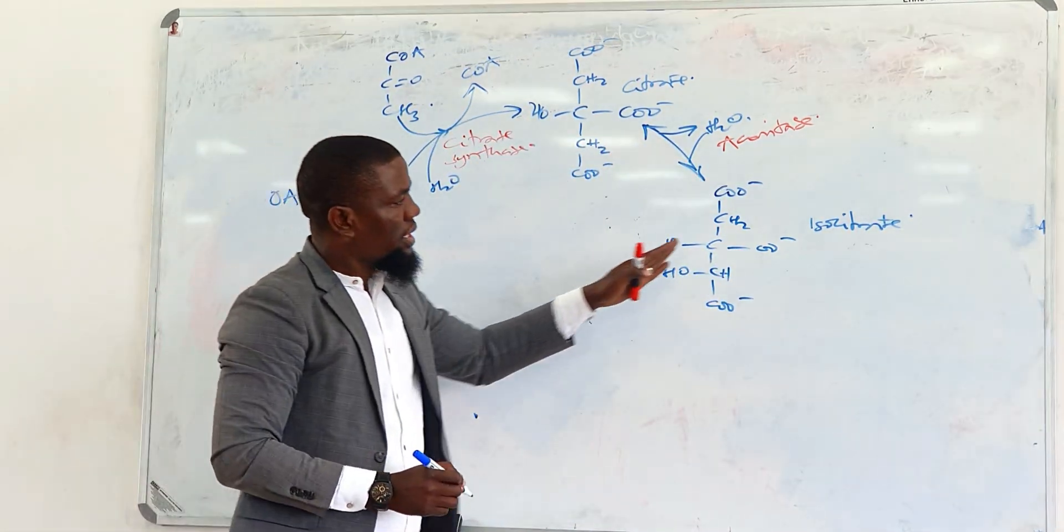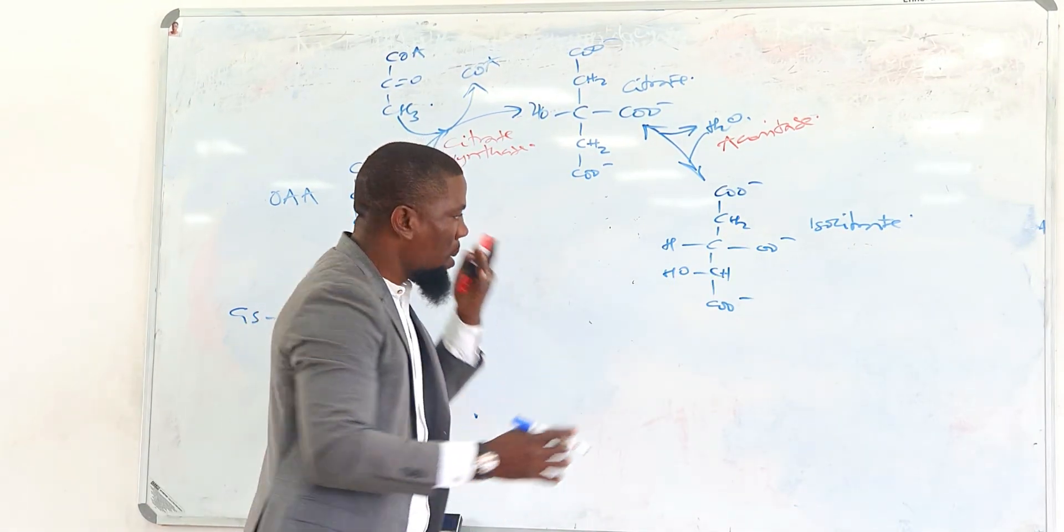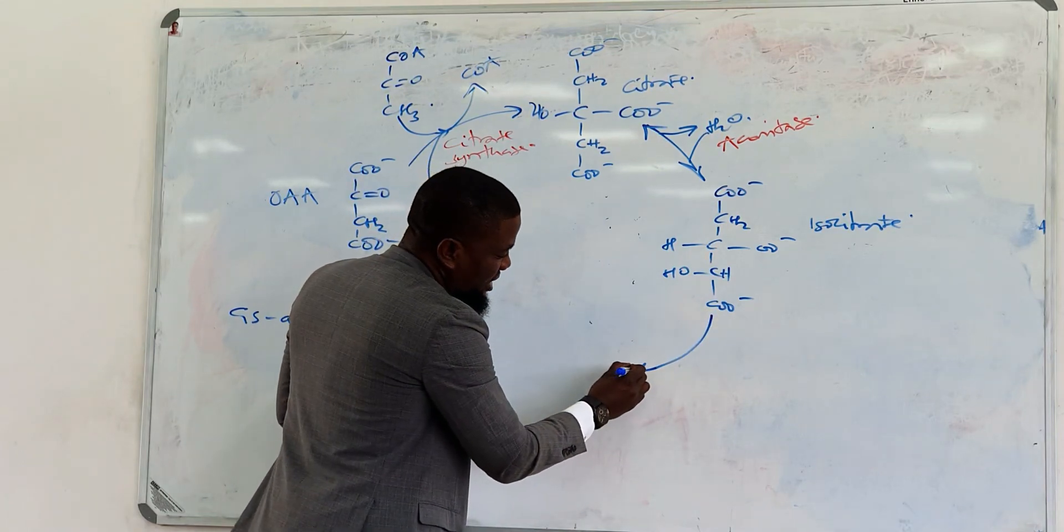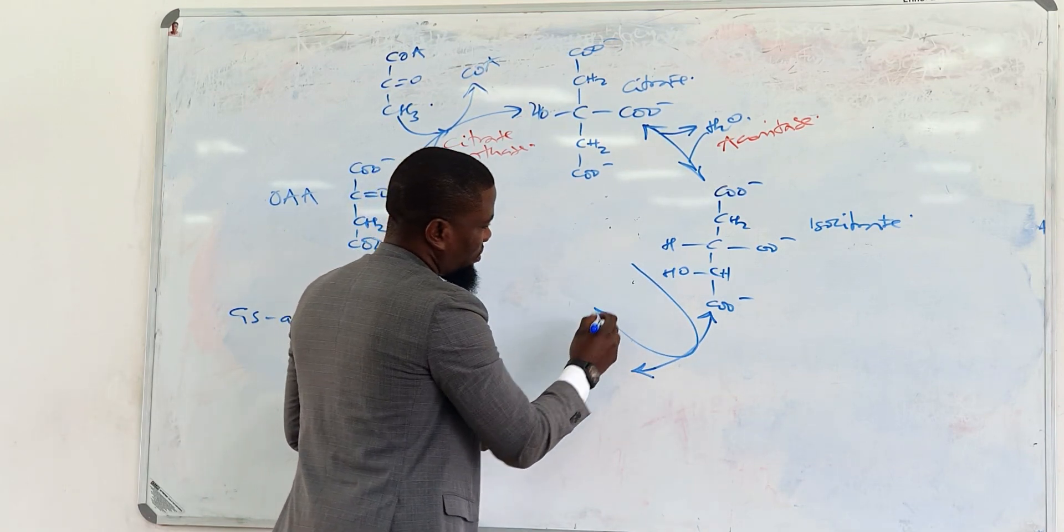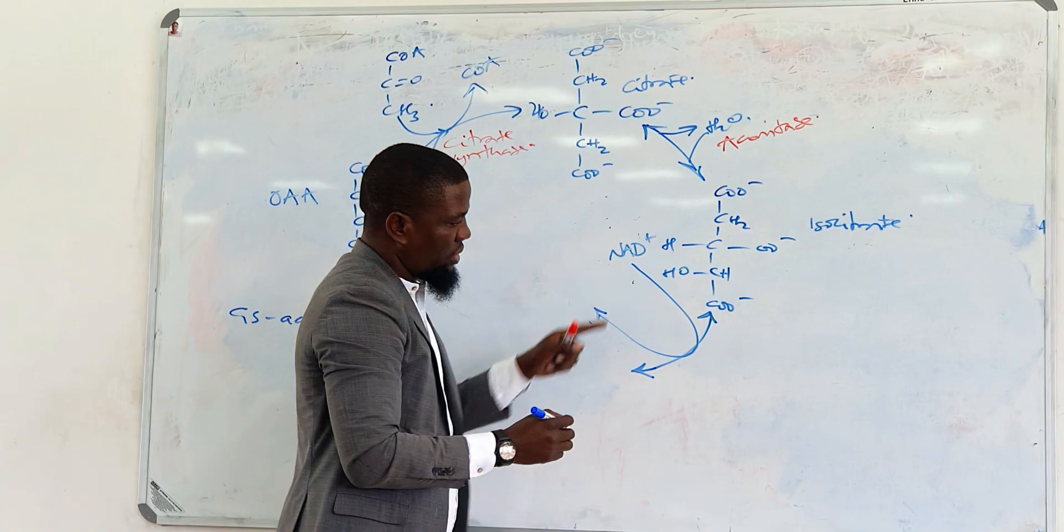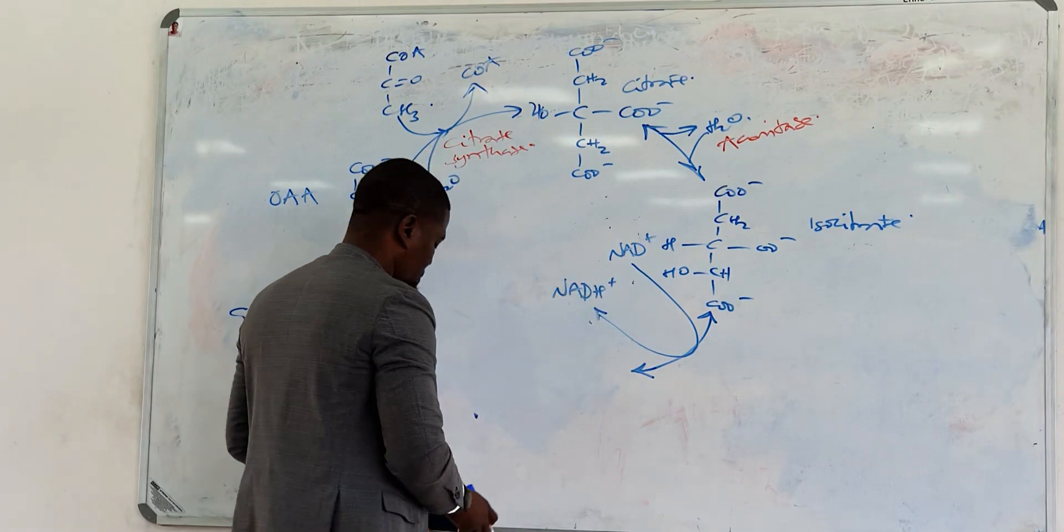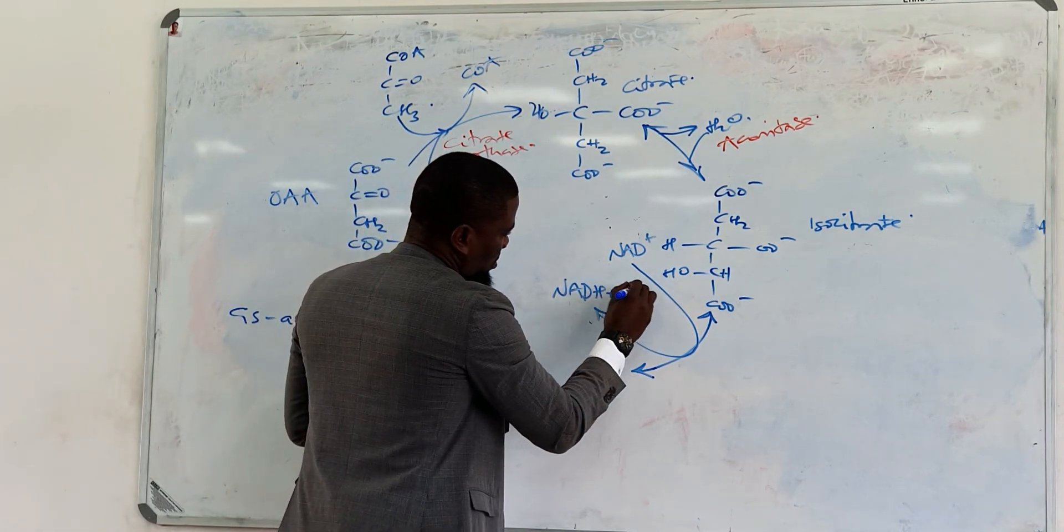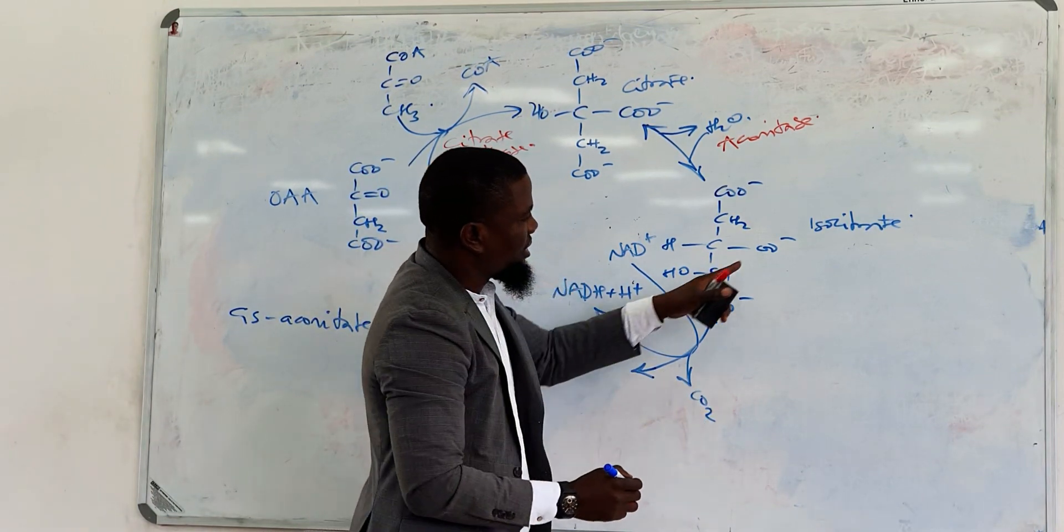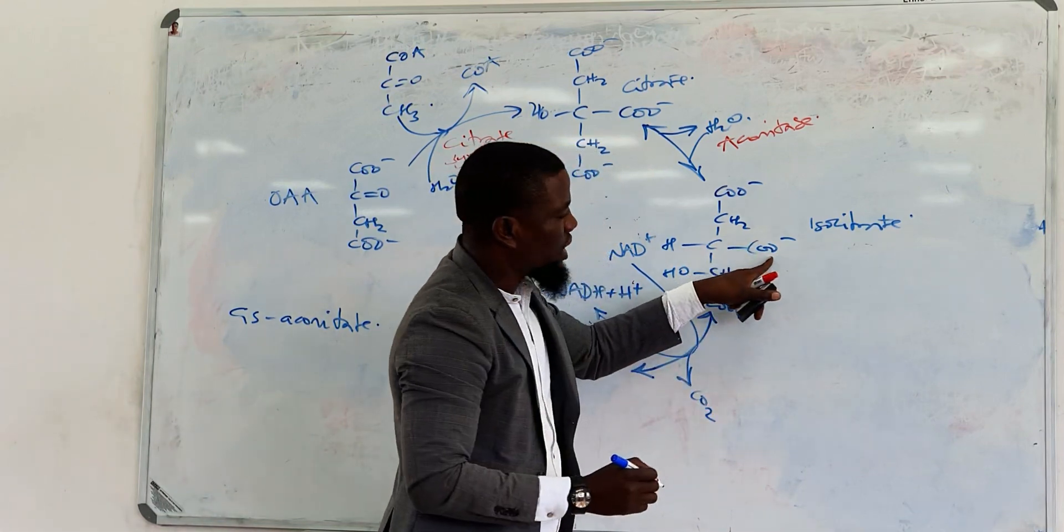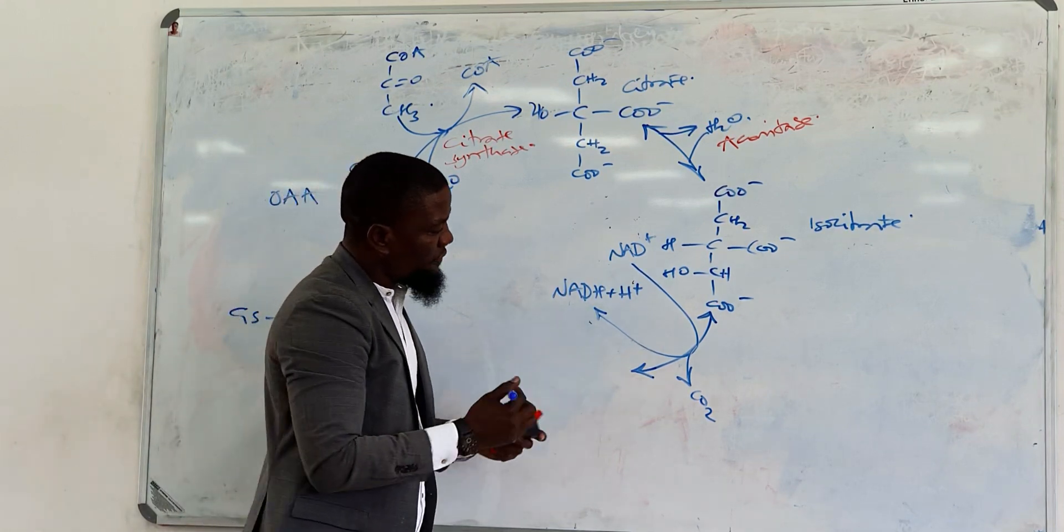The next reaction is that isocitrate is going to be oxidatively decarboxylated. It's going to use an NAD-linked dehydrogenase, which will oxidize this isocitrate into alpha-ketoglutarate, and at the same time, carbon dioxide is going to come off.